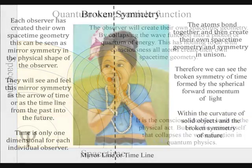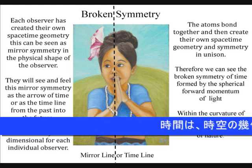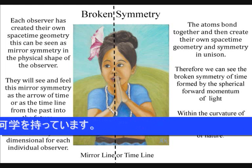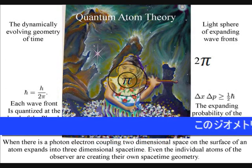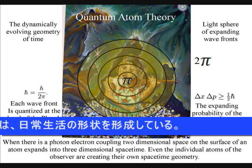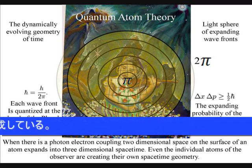The observer will see and feel time as only having one dimension, because there was an evolutionary advantage in seeing time this way. But in reality, the observer is creating their own space-time geometry within the fabric of Einstein's curvature of three-dimensional space-time.